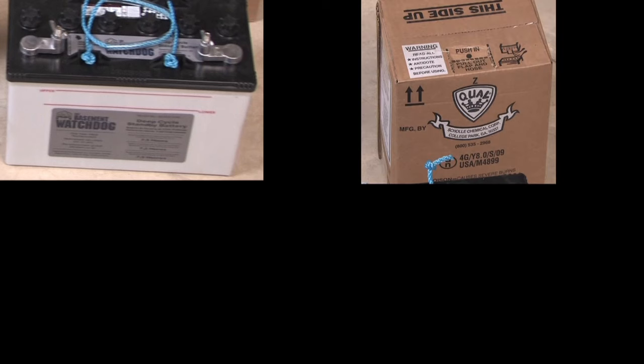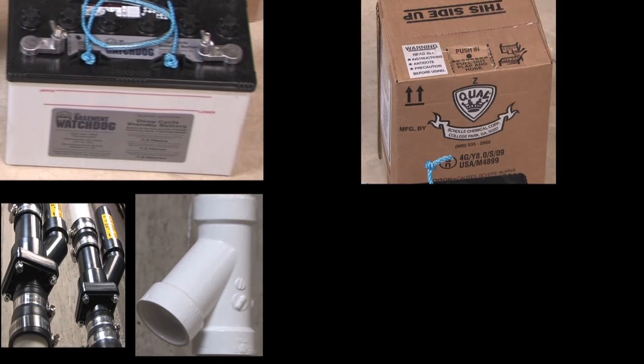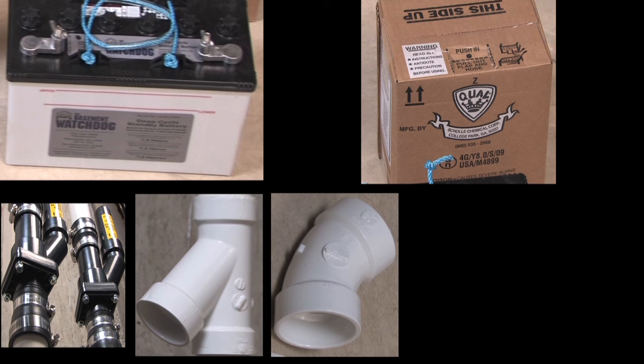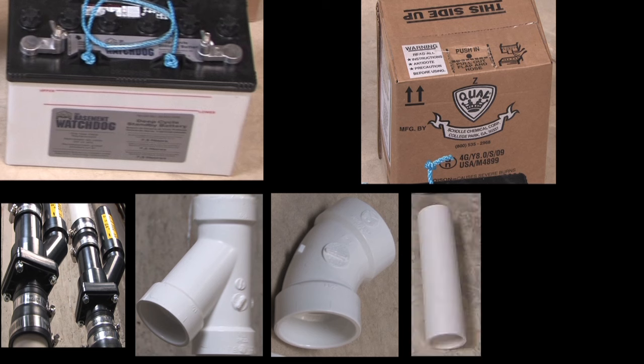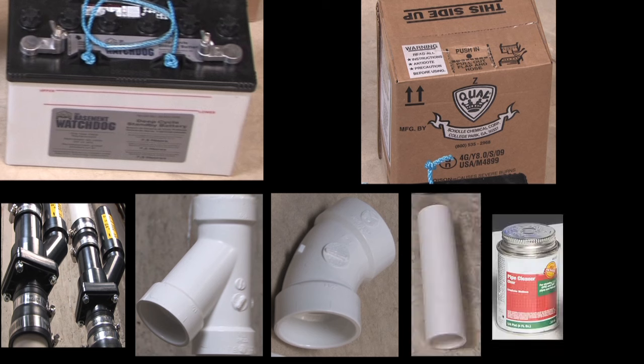To complete the installation, you'll also need to purchase a Basement Watchdog battery, an acid pack, two check valves, a Y connector, a 45-degree elbow, 1½-inch PVC pipe, PVC primer, and cement.